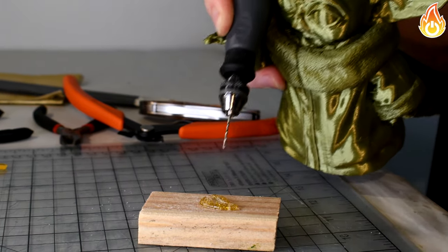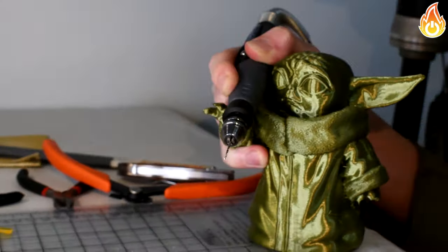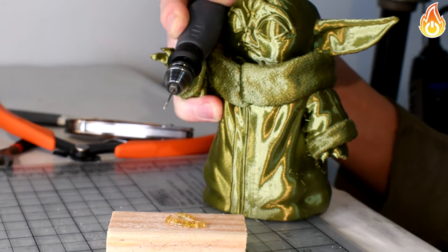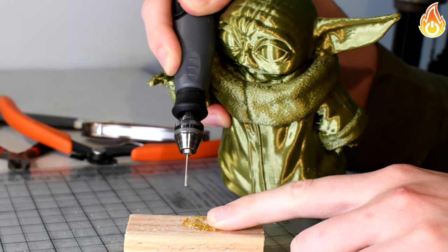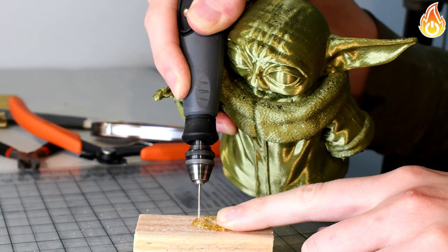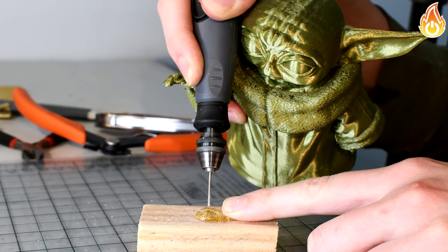Baby Yoda came in and said that we were incompetent and unable to do anything, so he decided he wanted to actually drill the holes in the bracelet. Obviously he was right, because his holes came out really nice and accurate.